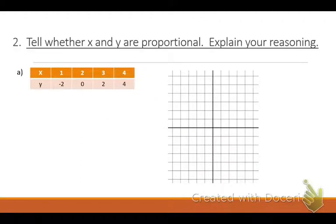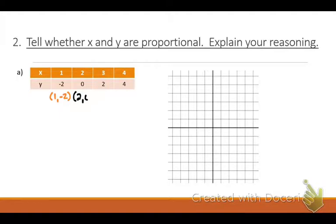Let's look at this first problem. It says to tell whether or not X and Y are proportional and explain your reasoning. If I'm plotting points on a graph, I can tell if they are proportional if the line passes through the origin, zero, zero. The points are: one and negative two; two and zero; three and two; four and four.